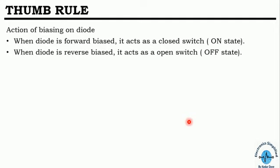Here is a useful thumb rule for any kind of circuit simplification: when a diode is forward biased it acts as a closed switch, meaning it is in the ON state. When the diode is reverse biased, it acts as an open switch, meaning it is in the OFF state. This basic idea applies to all clipper circuit simplifications.